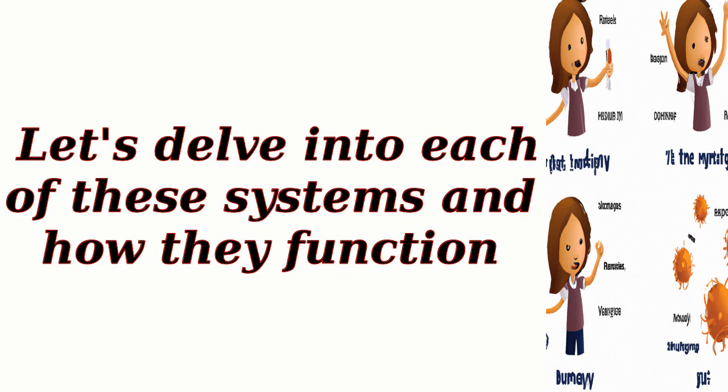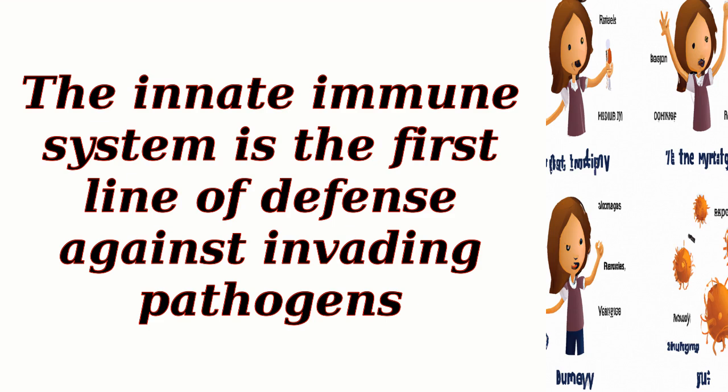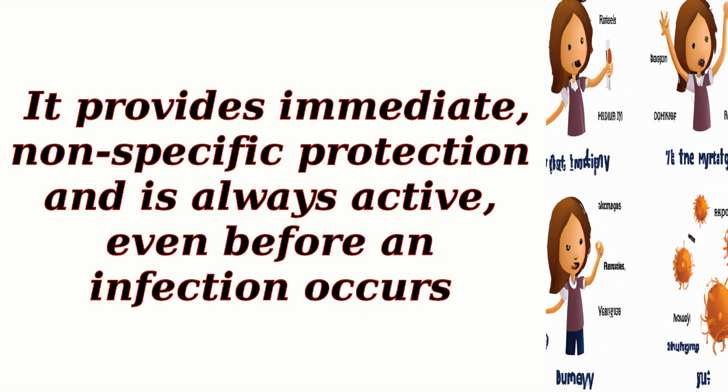Let's delve into each of these systems and how they function. The innate immune system is the first line of defense against invading pathogens. It provides immediate, nonspecific protection and is always active, even before an infection occurs.